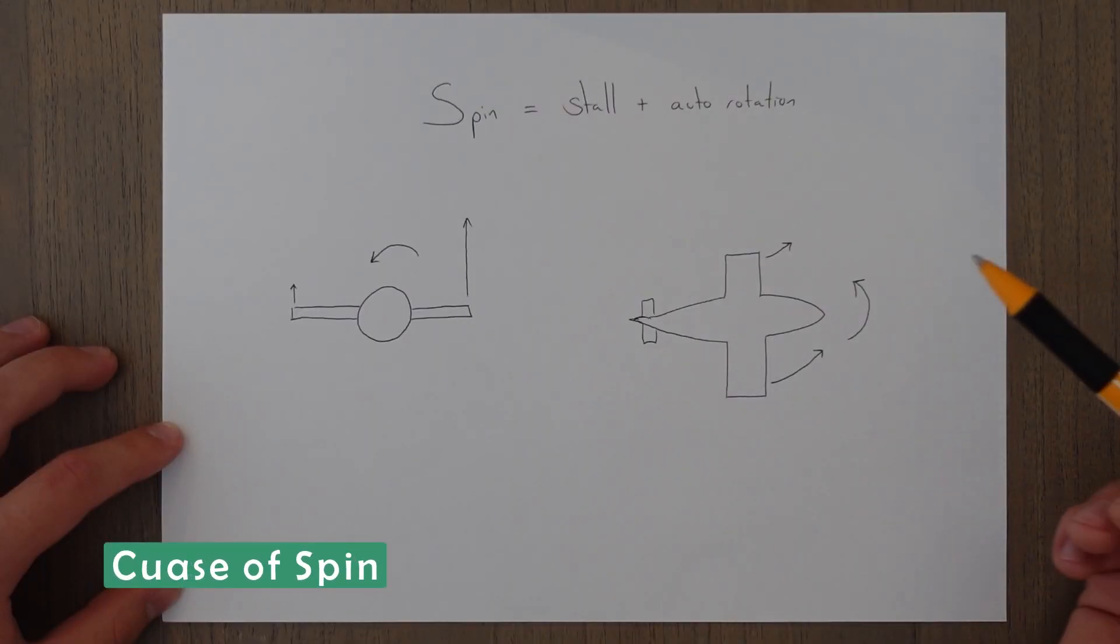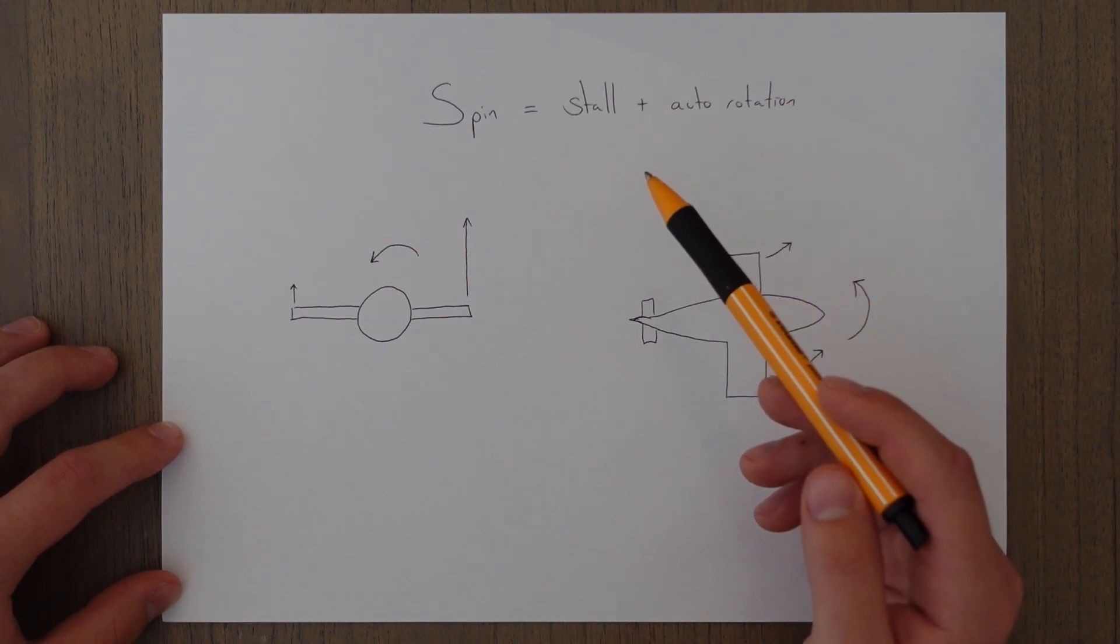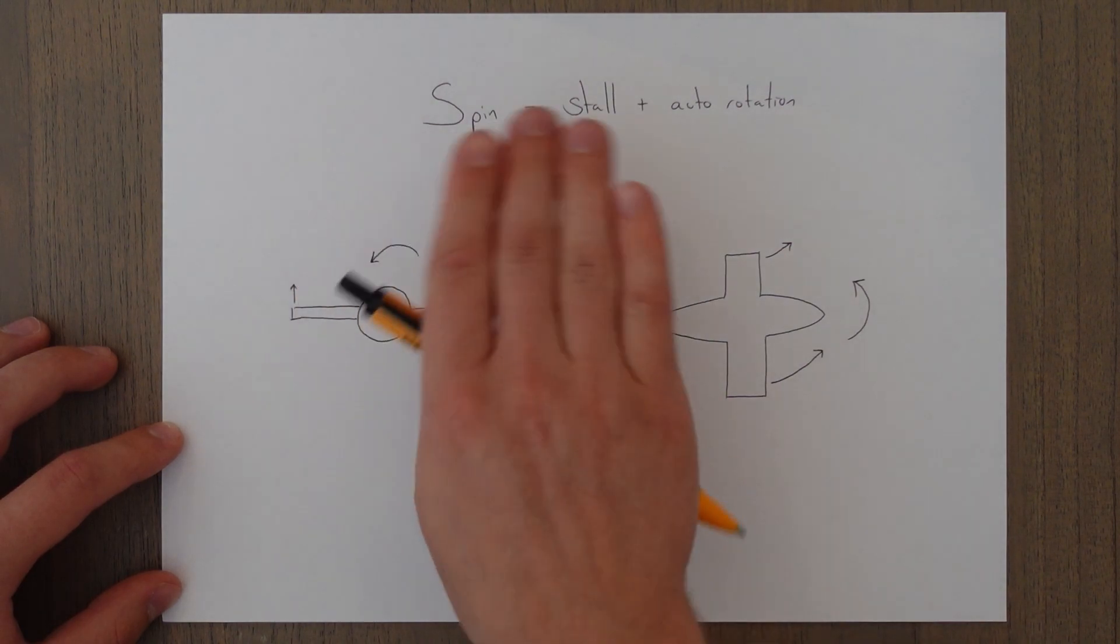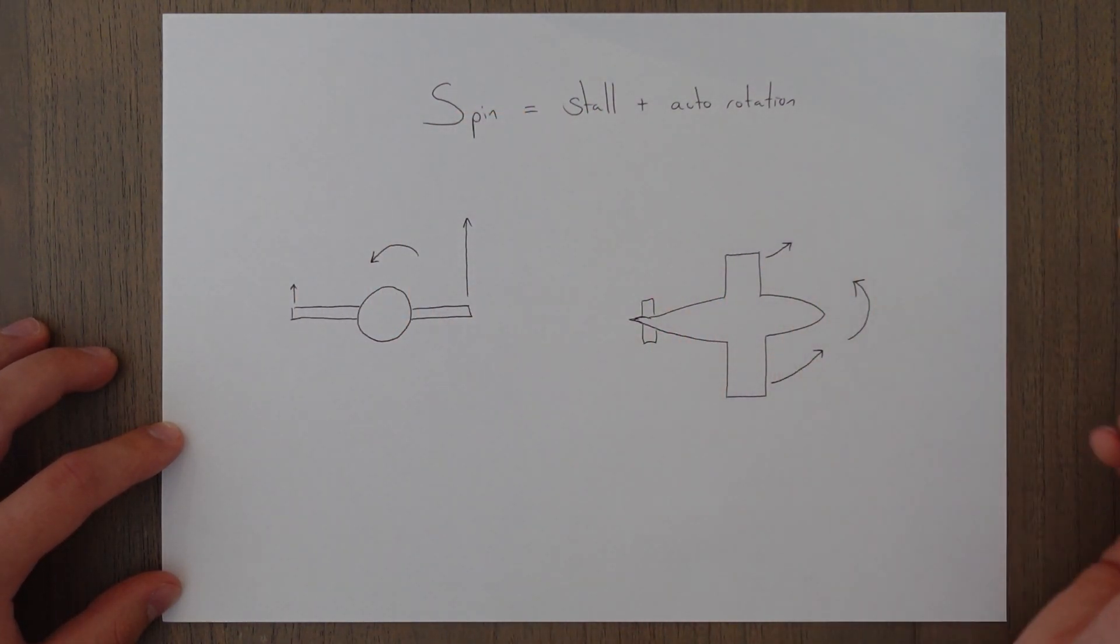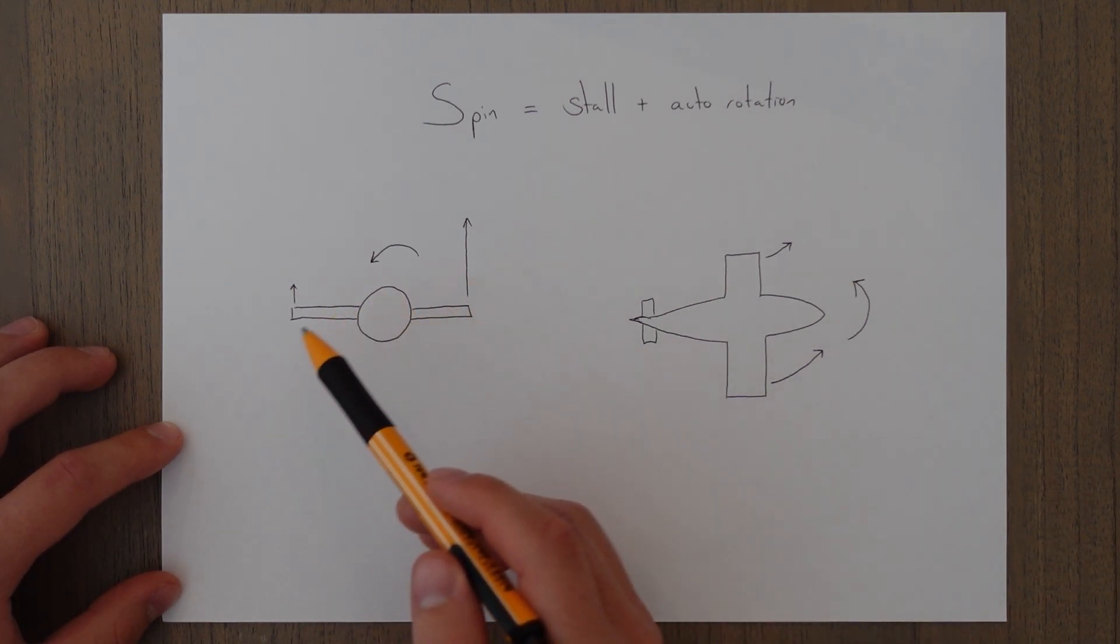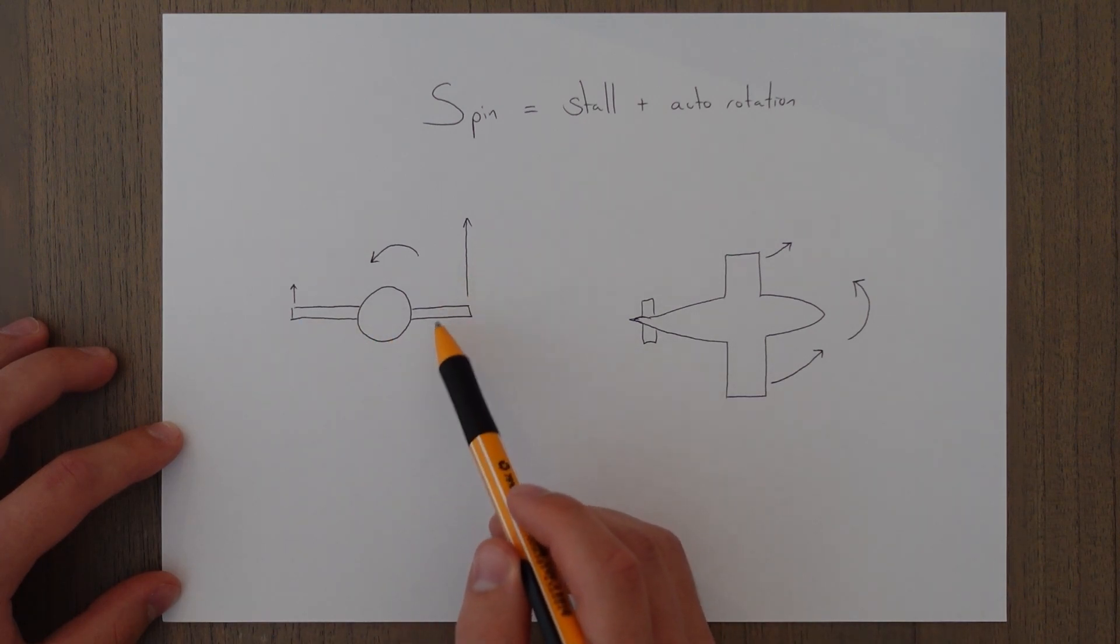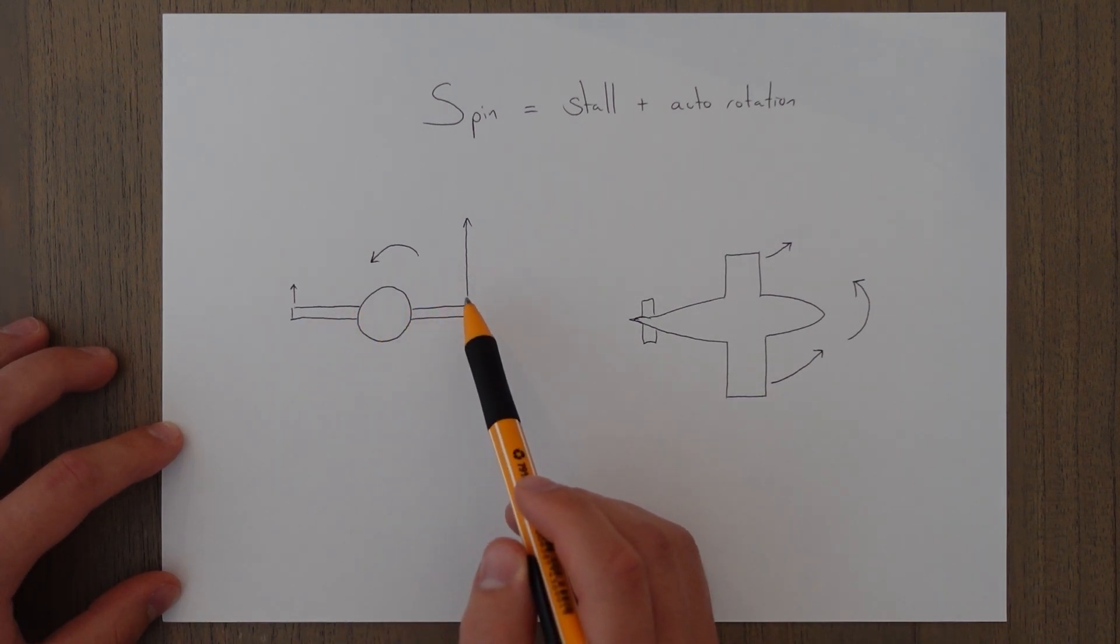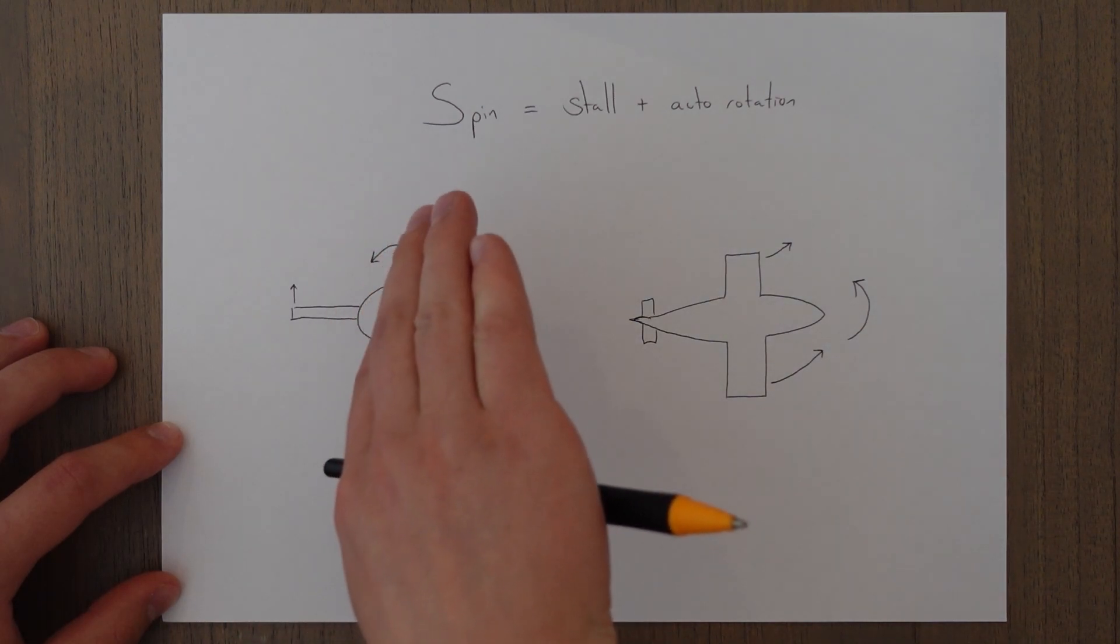For a spin to occur two things need to happen. The aircraft needs to be in a stalled state and there needs to be presence of uncontrolled rolling, yawing or pitching motion which is known as auto rotation. Auto rotation is caused when one wing stalls before the other. This leads to an imbalance in the amount of lift produced by the wings and you have more upwards lift force on one wing than the other which will lead to this rolling motion.